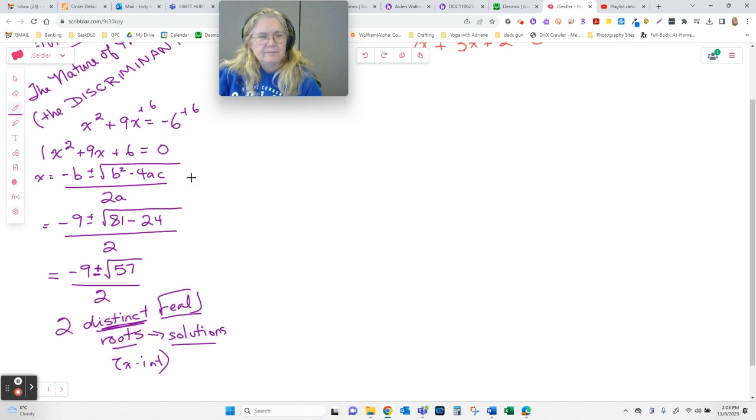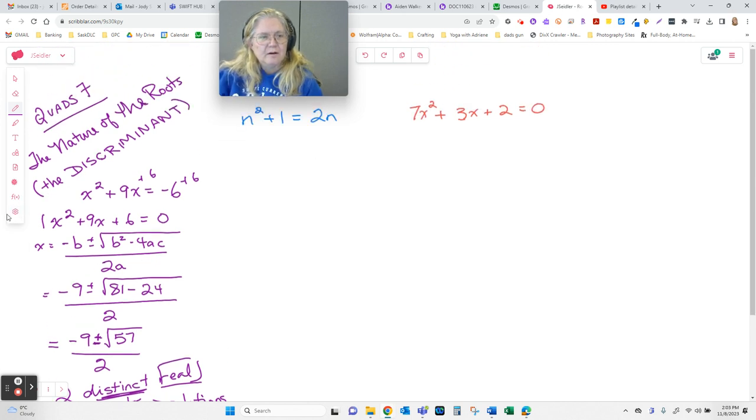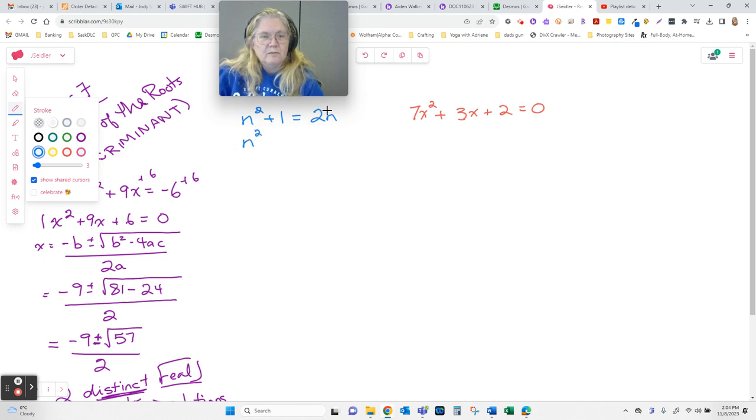Now, the second one we're going to do, up here, hiding behind my face. Again, we don't have a 0. And in fact, we don't even have an x. It really doesn't matter. I'm going to move that 2n by subtracting it so it moves to the other side.